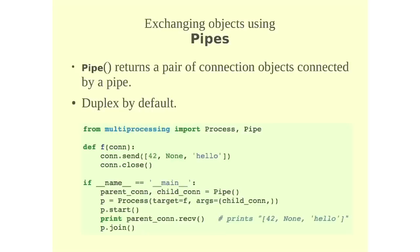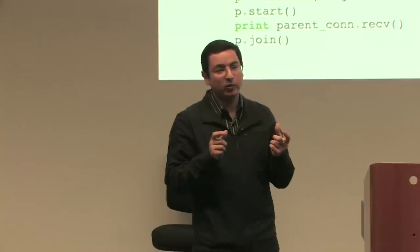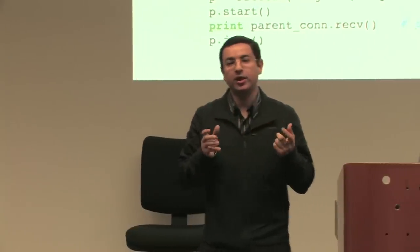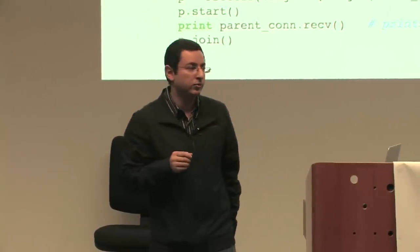The other method is pipes. Creating a pipe. And when you create an instance of pipe, you get a pair of connection objects, the two ends of the pipe. One end can send and one end receive. They are duplexed by default, which means both ends can send and receive. But you can disable that depending on what you want to do.